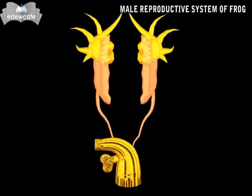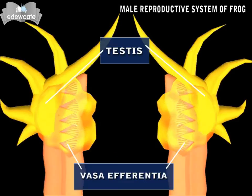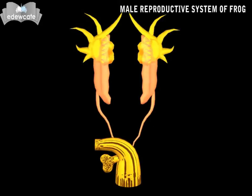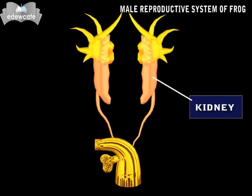The male reproductive system consists of a pair of testes, vas deferentia, and a pair of urinogenital ducts. Each testis is attached to a kidney.